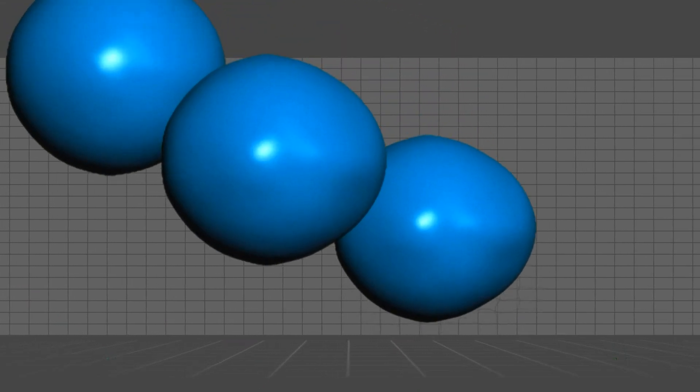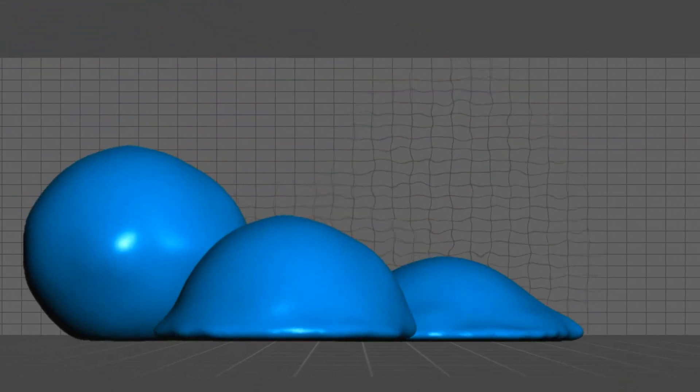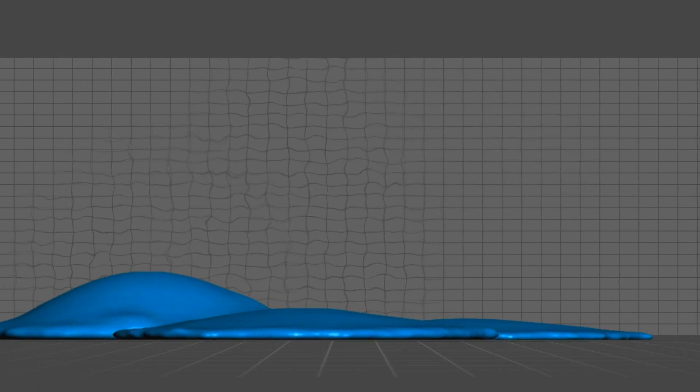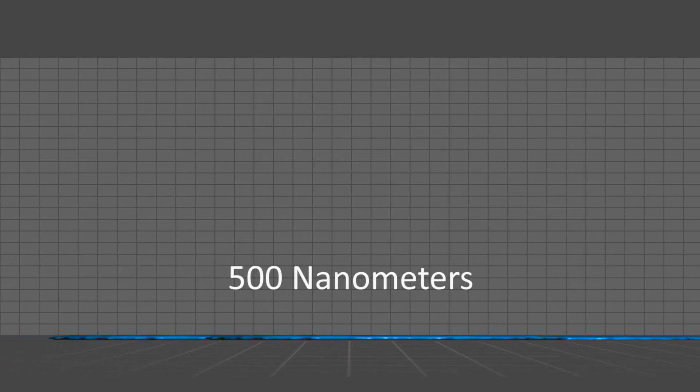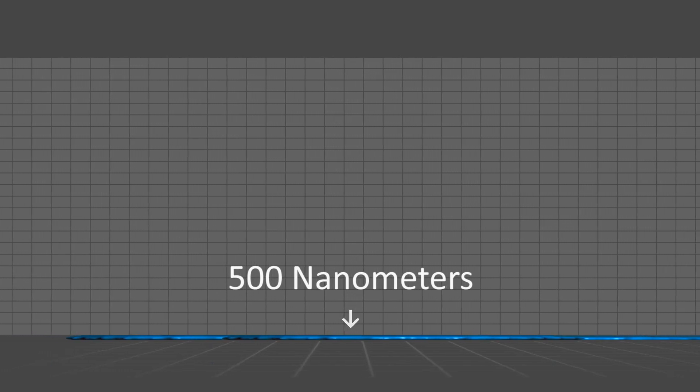Let's look again. As the Nano-Ink film spreads and dries, it becomes only 500 nanometers thick, the thinnest ink image of any printing process.